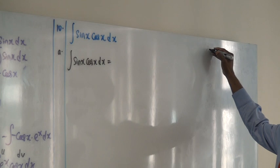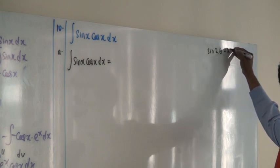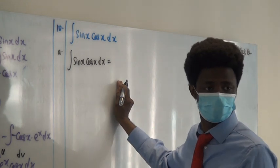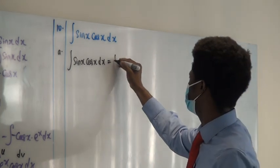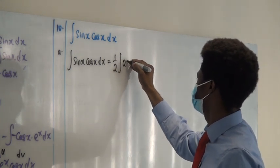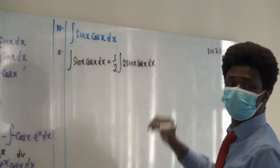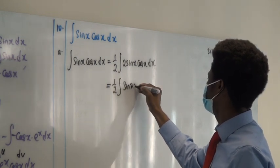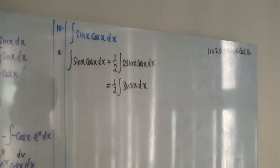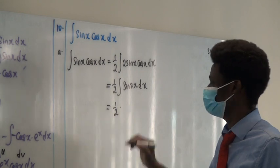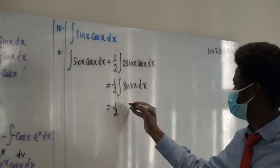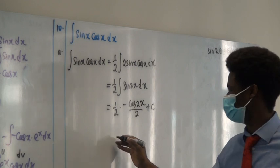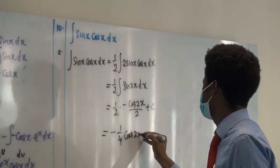Put a half outside: ½∫sin(2x)dx. The integral of sin(2x) is −cos(2x)/2, so this becomes ½ × (−cos(2x)/2) = −(1/4)cos(2x) + C.